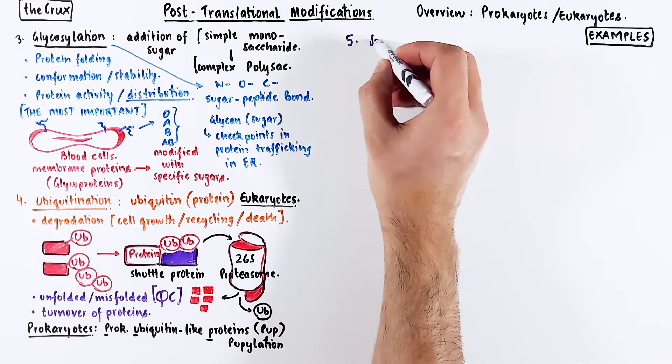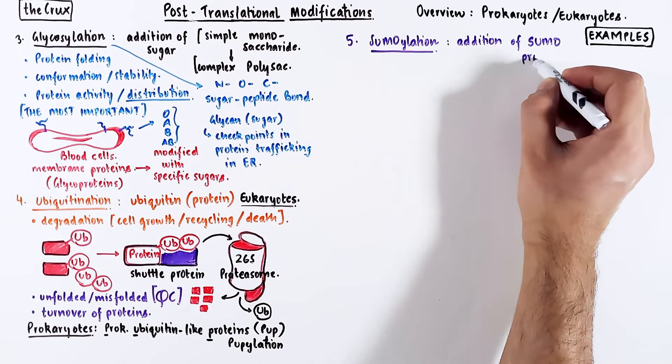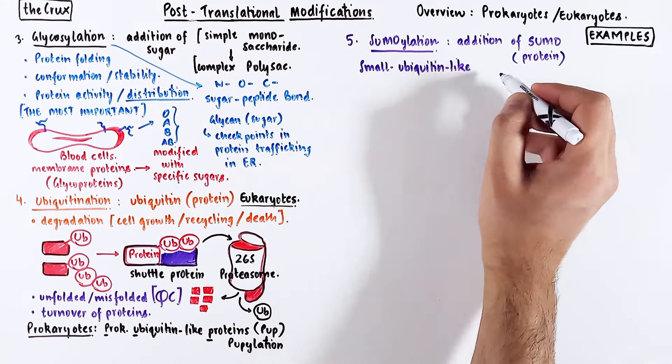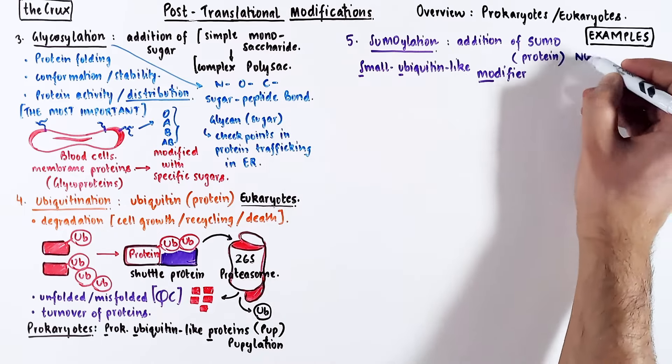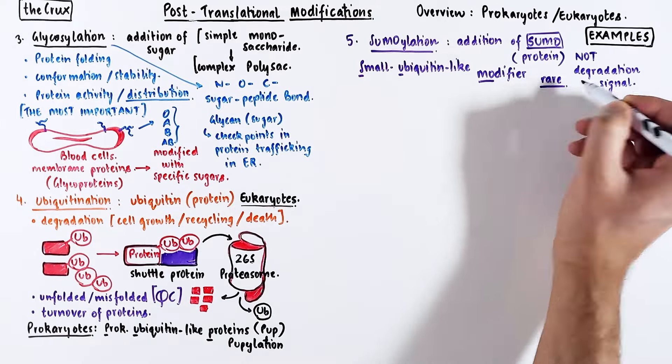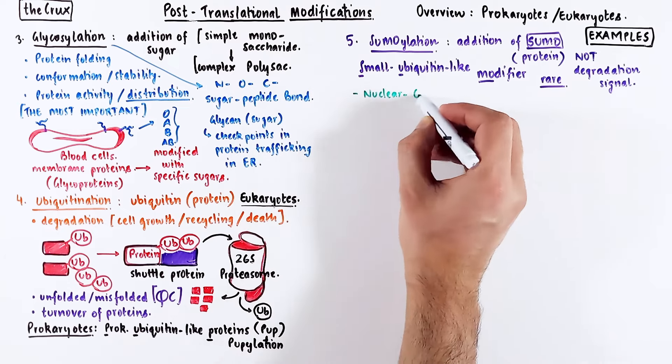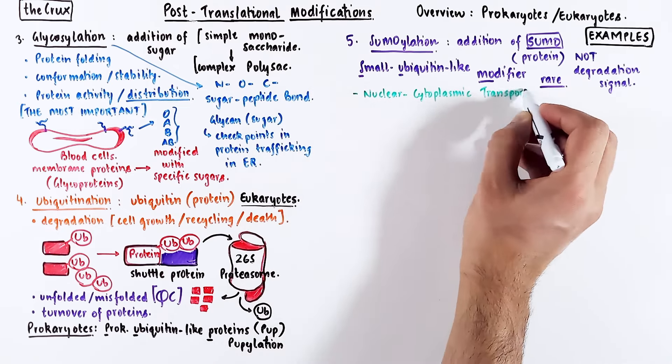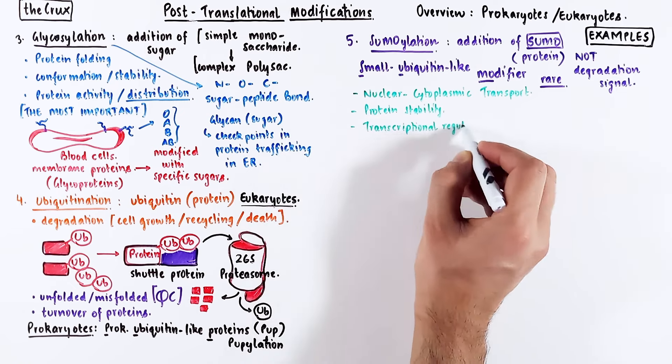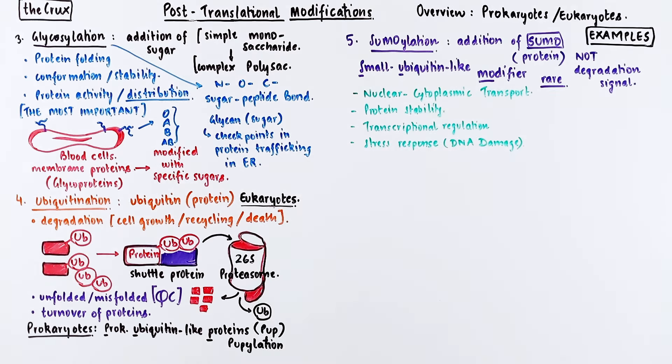The fifth modification is sumoylation, the addition of a small protein tag called SUMO, which stands for small ubiquitin-like modifier. But unlike ubiquitin, SUMO proteins are not degradation tags. SUMO tags are very rare compared to other modifications. Sumoylation is used to direct proteins in and out of nucleus and cytoplasm, so they're required for transport. They regulate proteins involved in transcription and stress response, especially DNA damage repair.